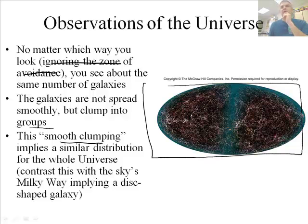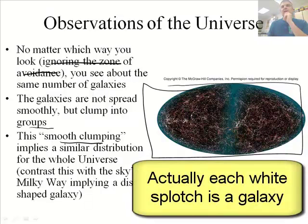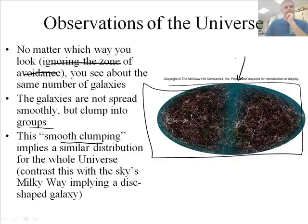Here's, if you will, a picture of the universe where each of these is a star. Let's not talk too much about this thing called the zone of avoidance, but it's kind of equally distributed in clumps. So that's sort of a hmm thing. So what does that tell us?